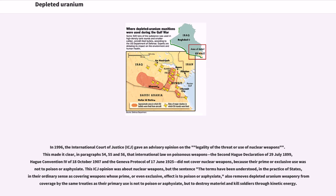In 1996, the International Court of Justice (ICJ) gave an advisory opinion on the legality of the threat or use of nuclear weapons. This made clear, in Paragraphs 54, 55 and 56, that international law on poisonous weapons — the Second Hague Declaration of July 29, 1899; Hague Convention 4 of October 18, 1907; and the Geneva Protocol of June 17, 1925 — did not cover nuclear weapons, because their prime or exclusive use was not to poison or asphyxiate. This ICJ opinion also removes depleted uranium weaponry from coverage by the same treaties, as their primary use is not to poison or asphyxiate, but to destroy material and kill soldiers through kinetic energy.